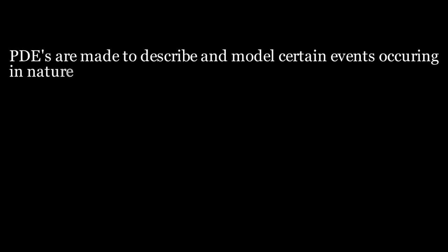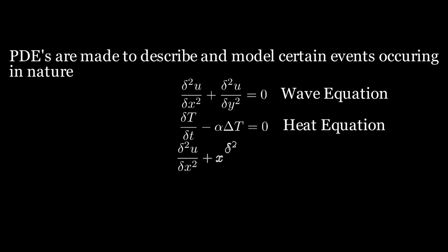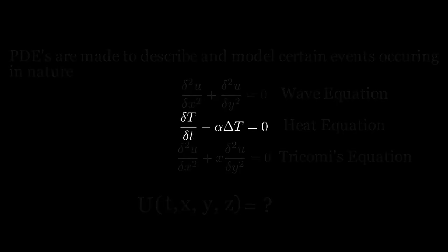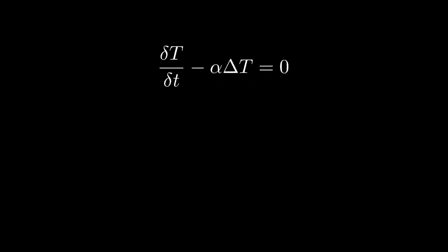Generally, PDEs are made to describe and model certain events occurring in nature via a mathematical equation, and this equation links the variation of a physical entity across different variables. Generally, it is a temporal variation of an entity to its spatial variation, in a way to predict the value of a given entity at a given position p and at a given time t.